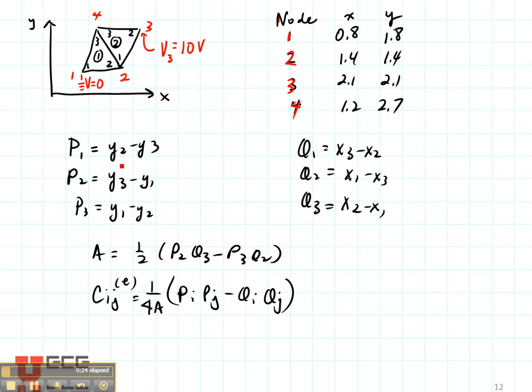So for instance, let's look at element number 1. For element number 1, node 2 is global node 2. Node 3, however, is global node 4. Node 1 is 1, that's going to stay the same. 1 is 1 and 2 is 2. Over here, global node 3 is 4 and the others stay the same.